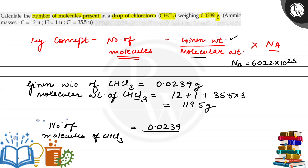by 119.5 and it is further multiplied by Avogadro's number that is 6.022 into 10 to the power 23. After solving this, the answer we get is 1.2044 into 10 to the power 20 molecules.